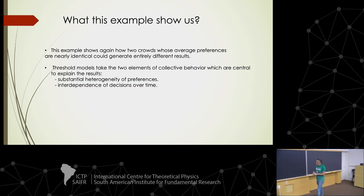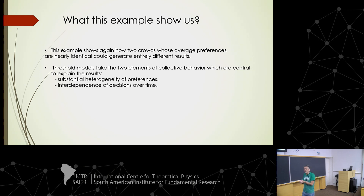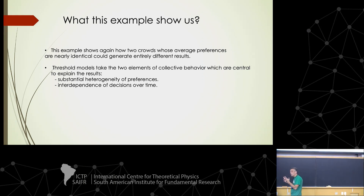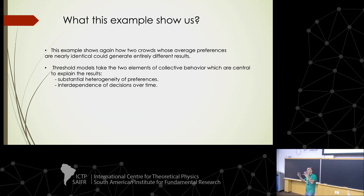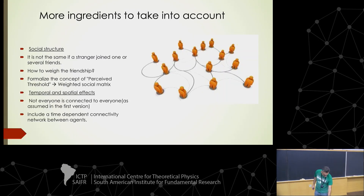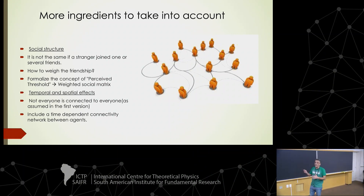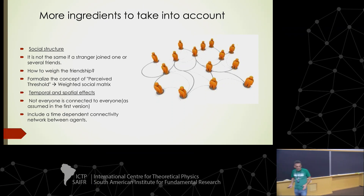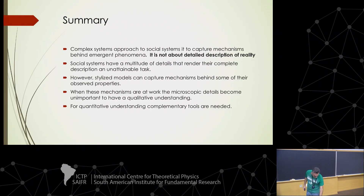This is what I would like to tell you in this first class: how threshold models of complex dynamics have a very important ingredient to explain how different outcomes can arise with very slight perturbations. Also, as Granovetter says, this is a very simple version but it can be improved by adding ingredients — social structure, weights for friends, temporal and spatial effects, etc. This is a problem that has been analyzed many times.